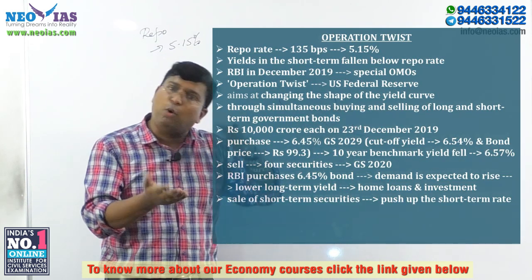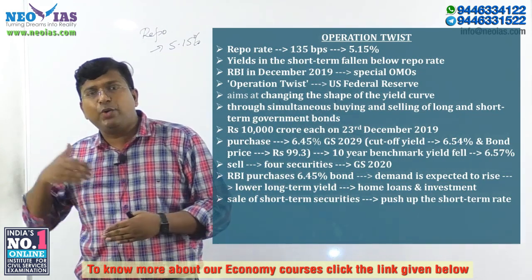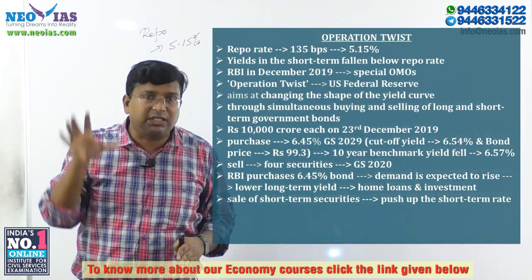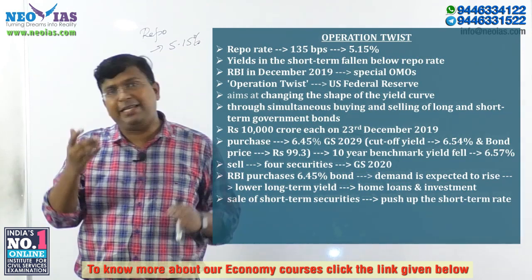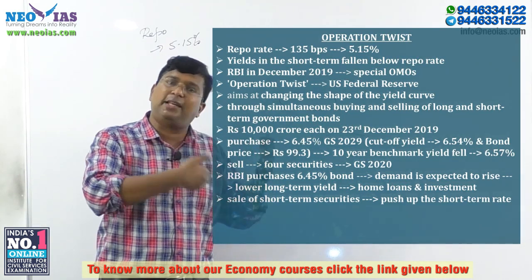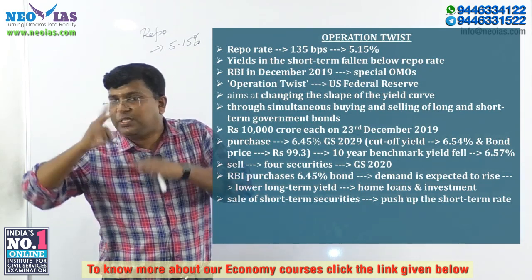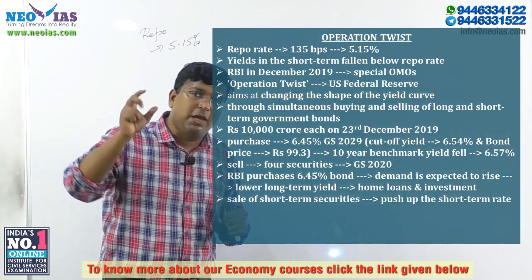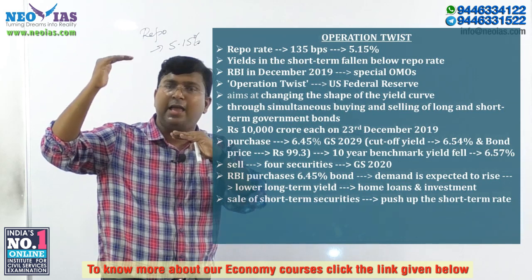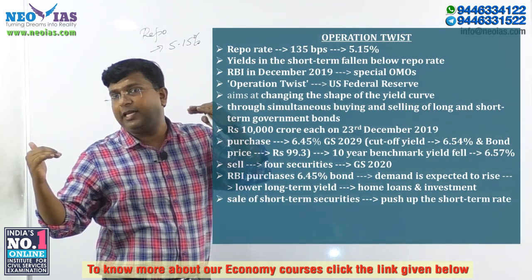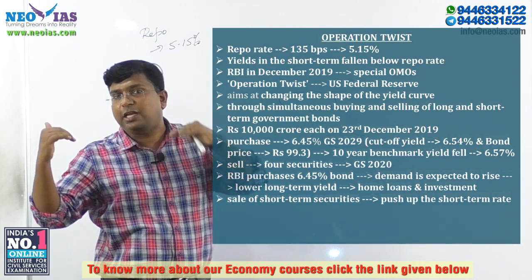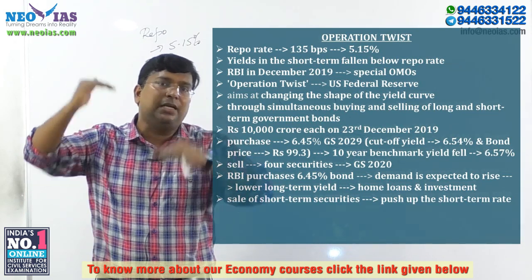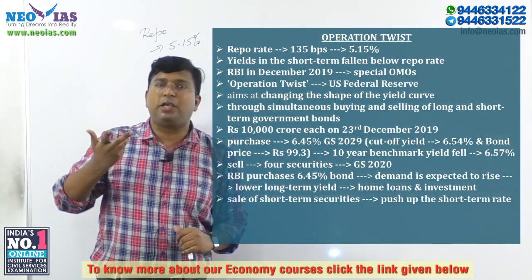This monetary policy tool was earlier used by the US Federal Reserve — the central bank of the USA — way back in 1961, and again in 2011 and 2012 during recessionary periods. In India, this tool is being used for the first time. It is called a 'twist' because it tries to twist the yield curve — lowering the long-term government security yield while increasing the short-term government security yield.